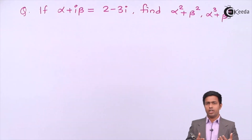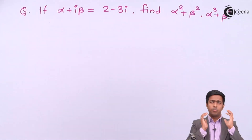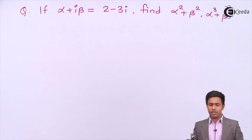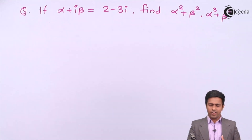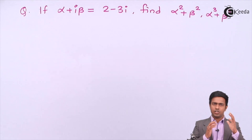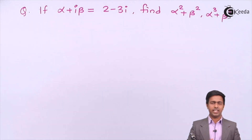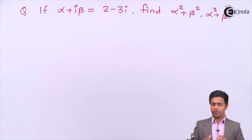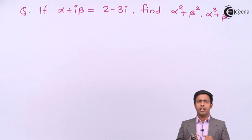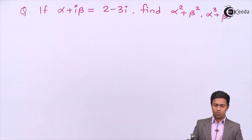Hello friends, here we are going to solve a numerical based on complex numbers. We have one value given: alpha plus i beta equals 2 minus 3i, and we have to find out the value of alpha squared plus beta squared, and alpha cubed plus beta cubed.